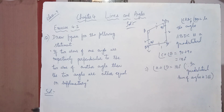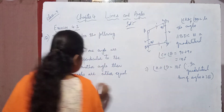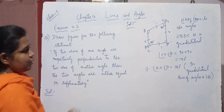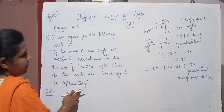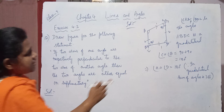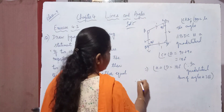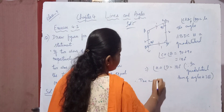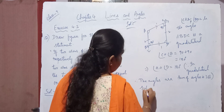That is, they are supplementary. Here, what he is asking us to show is that the two angles are either equal — which we showed in the first case — or supplementary. Which means the angles are supplementary. Therefore, the angles are supplementary.